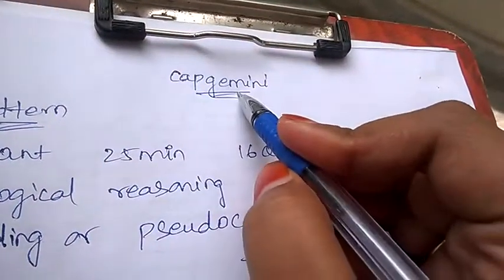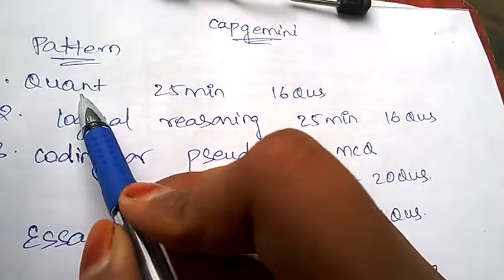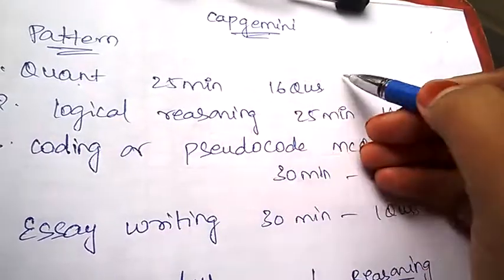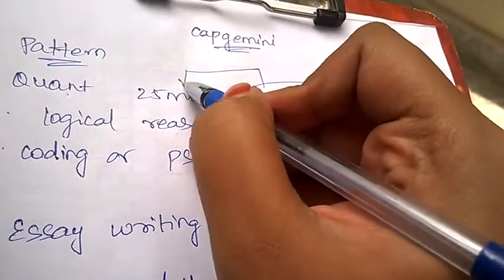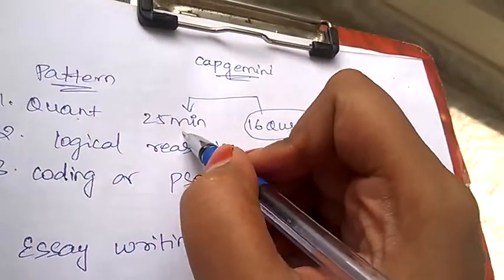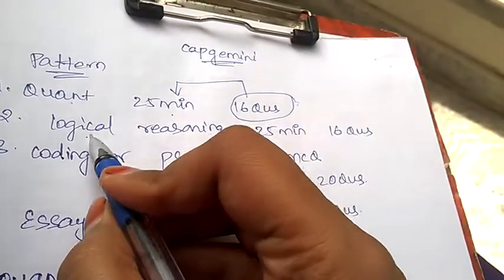First, questions will be asked on quantitative aptitude. There will be 16 questions and you will be having 25 minutes to solve. In the next section, you will be asked to solve questions on logical reasoning.